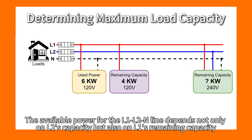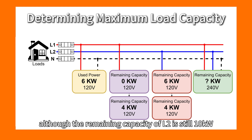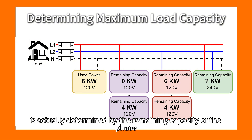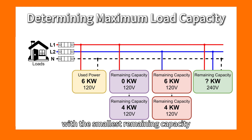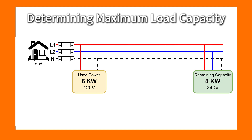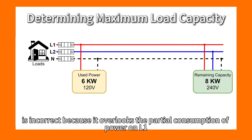The available power for the L1-L2 line depends not only on L2's capacity but also on L1's remaining capacity. Although the remaining capacity of L2 is still 10kW, the maximum supported power of the L1-L2 line is determined by the remaining capacity of the phase with the smallest remaining capacity. Since L1 only has 4kW left, the maximum power for the L1-L2 line is 4kW multiplied by 2, equaling 8kW. Simply subtracting the 6kW load from the total power limit is incorrect because it overlooks the partial consumption of power on L1.